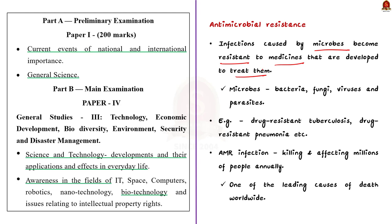Here, microbes include bacteria, fungi, viruses, and parasites. Some examples of drug-resistant infections include drug-resistant tuberculosis, drug-resistant pneumonia, and so on. These infections are killing and affecting millions of people annually. So, AMR is now one of the leading causes of death worldwide. This is the brief information about AMR.